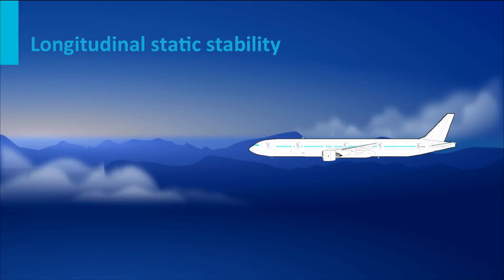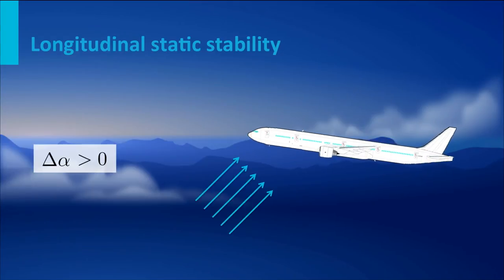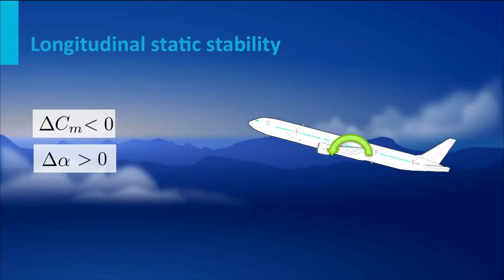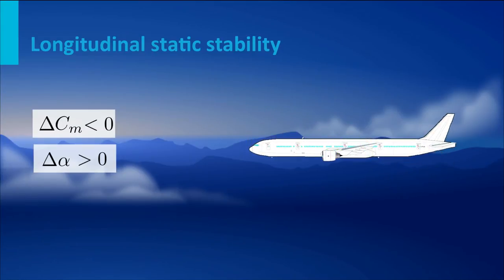To understand what longitudinal static stability really means, consider an aircraft flying in equilibrium that suddenly experiences an upward airflow — turbulence — causing an increase in angle of attack, so the nose goes up. For a stable aircraft, for this positive delta alpha, we want a change in pitching moment which brings the nose down again — that is a negative pitching moment. We use the pitching moment coefficient to make it unitless so it works for all speeds and altitudes.